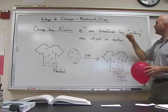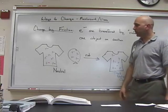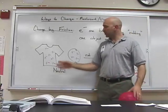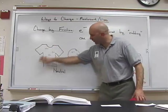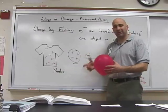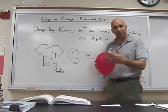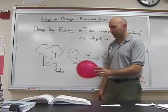So electrons are transferred by rubbing one object against another. Originally, right now, my shirt has about the same number of electrons as protons and they're pretty evenly distributed. The balloon has protons and electrons by about the same number and they're pretty evenly distributed. Both of them are neutral at the moment.